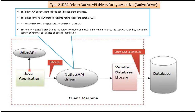Here you can see the Java application which uses JDBC API. This Java application will send JDBC calls to Native API driver. What this Native API driver will do is it will convert JDBC calls to database specific calls using vendor specific library, and then it will redirect database specific calls to database.